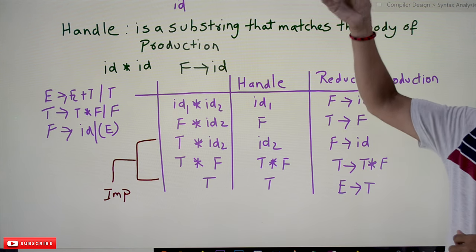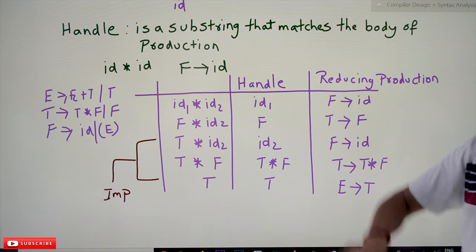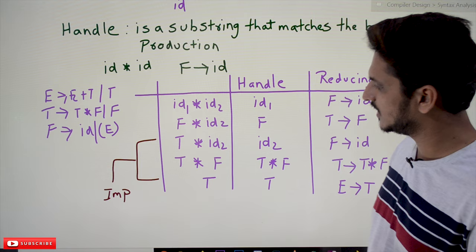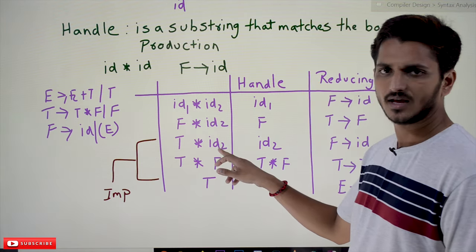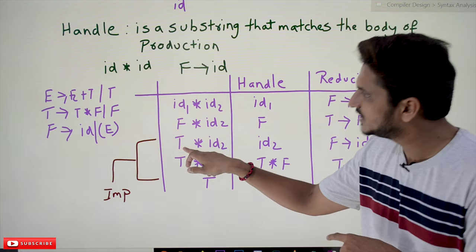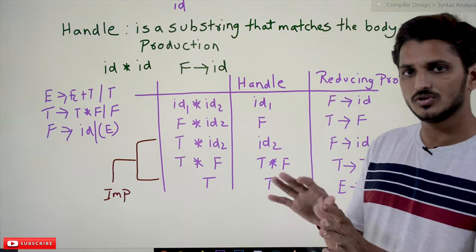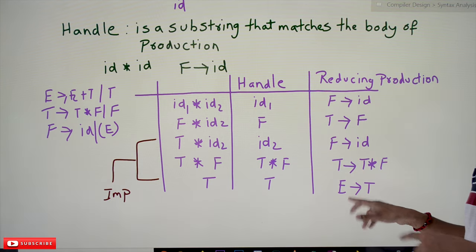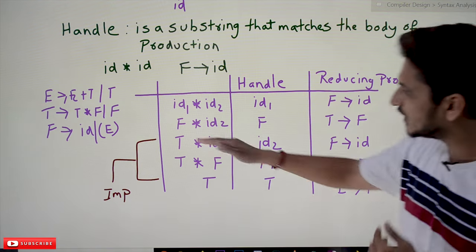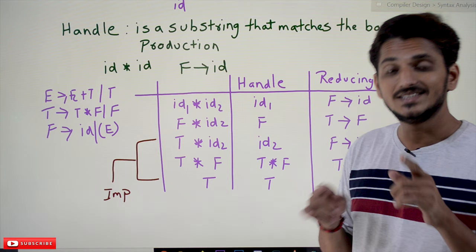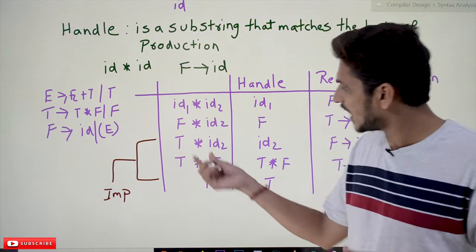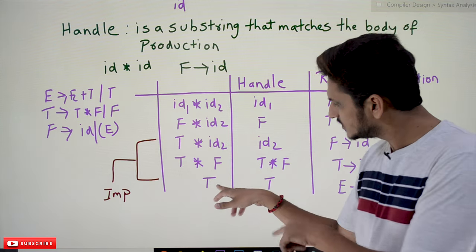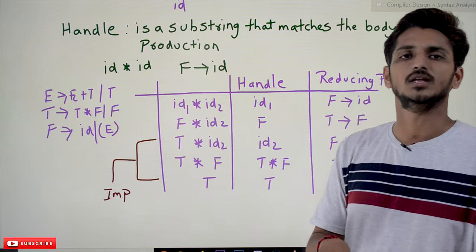In top-down parsing we go from top to bottom — starting from E and deriving the input string. In bottom-up parsing we take the input string and reduce it to E. One important point: at the step 'T star id', why did we consider the handle as id2 and not reduce T to E at that point? T can be reduced to E, but we did not consider that T as a handle there — we only considered T as a handle to reduce to E at the final step. This raises the question: in which situations should we consider T to reduce to E, and in which situations should we not? That clarity is needed.